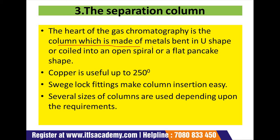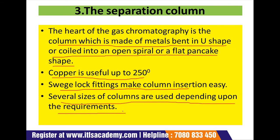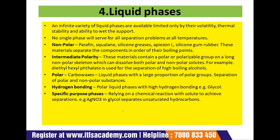The heart of the gas chromatography is the column, which is made of metal bent in a U-shape or coiled into an open spiral or flat pancake shape. Copper is used up to 250 degrees centigrade, and Swagelok fittings make column insertion easy. Different sizes of columns are used depending upon the requirements.